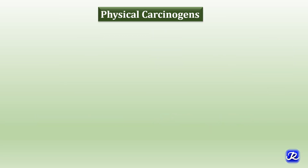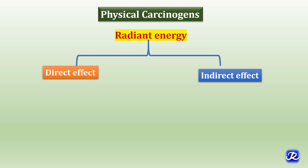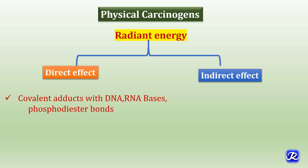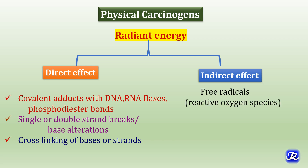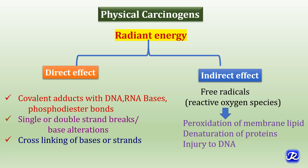The second type of carcinogens are physical carcinogens, which include ultraviolet rays, X-rays and gamma rays. Radiant energy exerts its effects by direct and indirect mechanisms. The direct effect is by forming covalent adducts with DNA and RNA bases and phosphodiester bonds, causing single or double strand breaks, and by cross-linking of bases or strands. The indirect effect of radiant energy is through free radicals, that is reactive oxygen species, which cause peroxidation of membrane lipids, denaturation of proteins and injury to DNA.